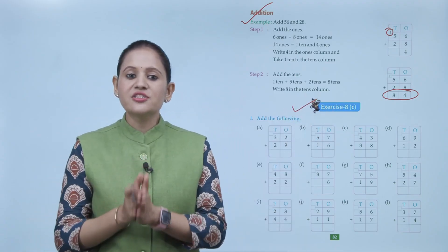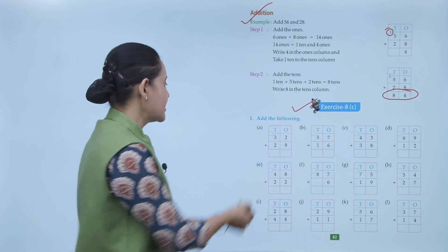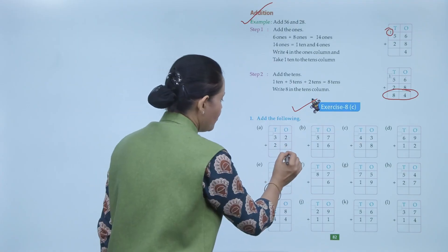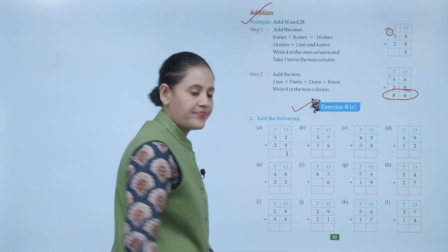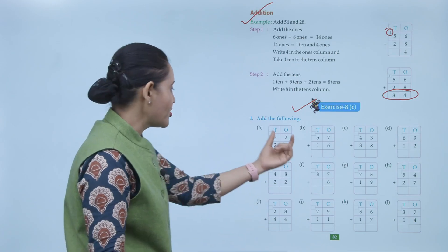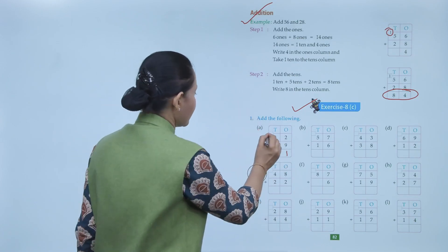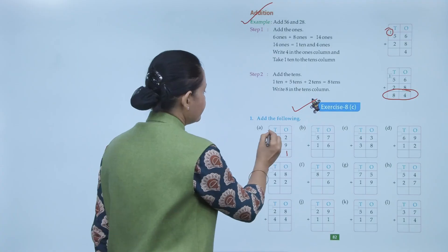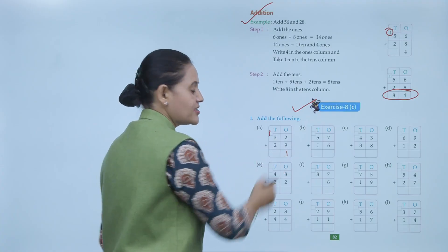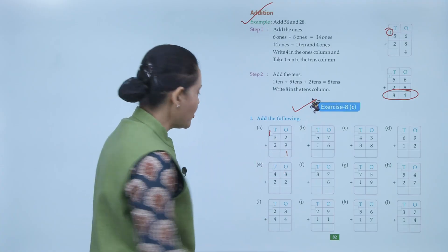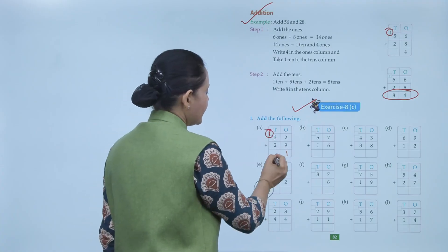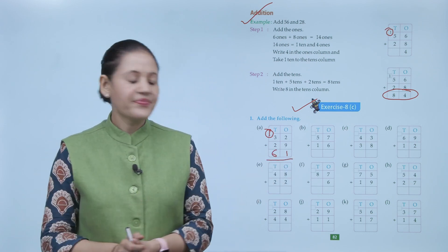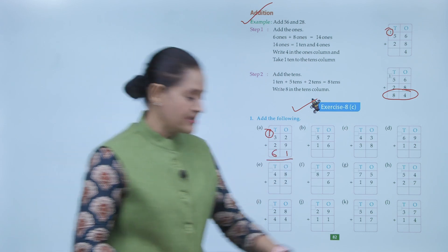Add the following: 32 plus 29. Start from the ones — 9 plus 2 equals 11. Write 1 at the ones place and carry over 1 to the tens. Then 3 plus 2 equals 5, plus the carried 1 equals 6. So the answer is 61. Clear? This is how we add numbers.